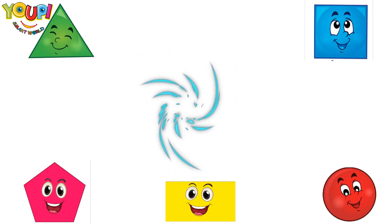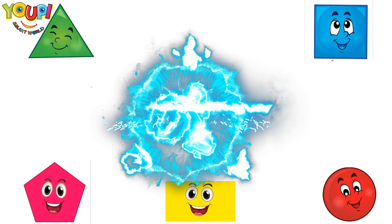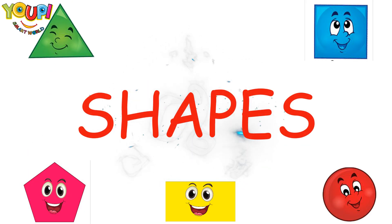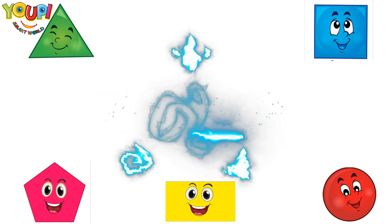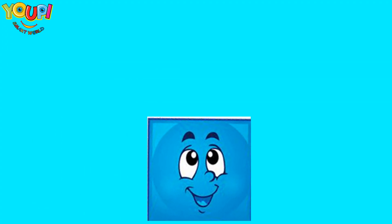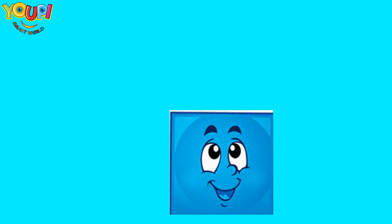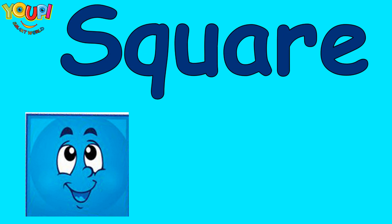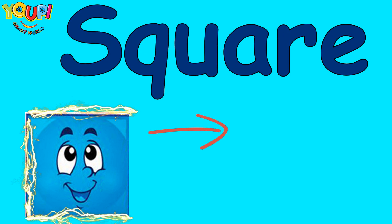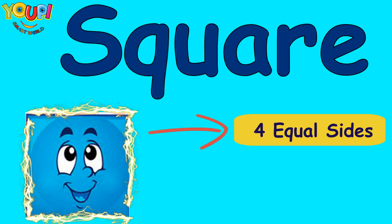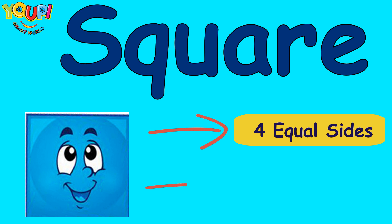Hello everyone, today we're going to learn about shapes. Are you ready? Let's go! What shape is this? That's right, it's a square! It has four equal sides and four corners.